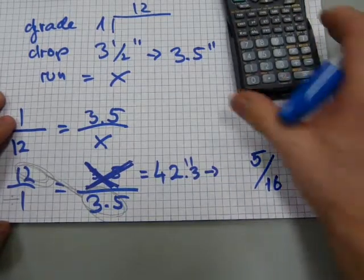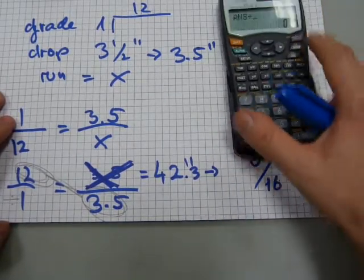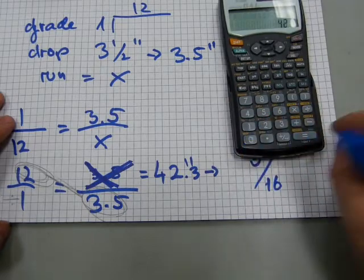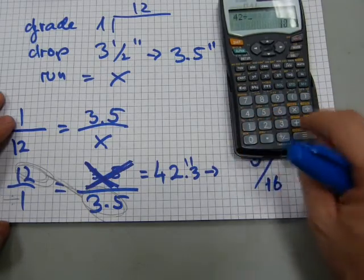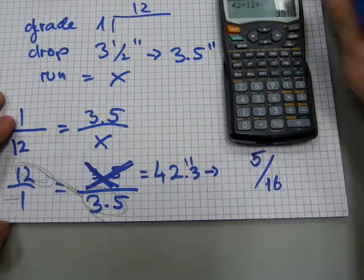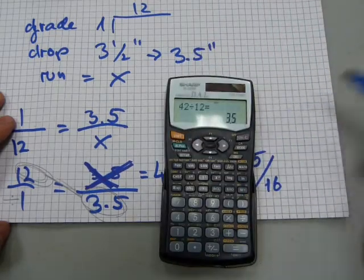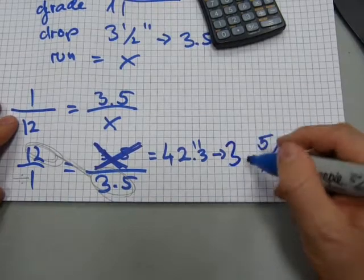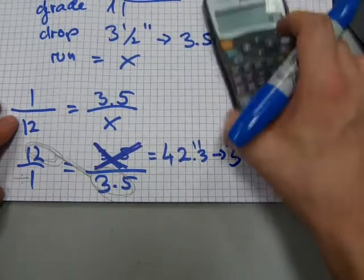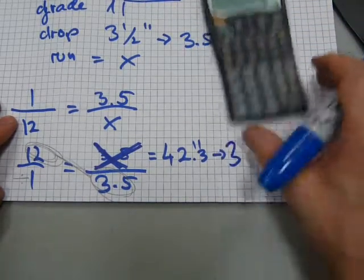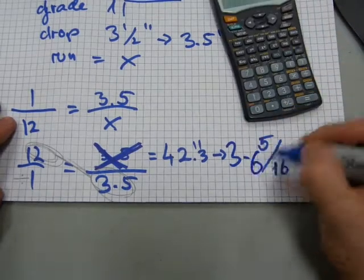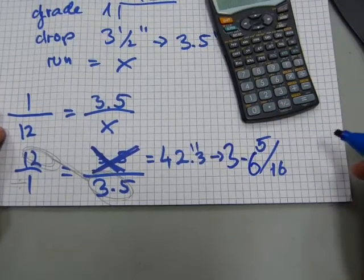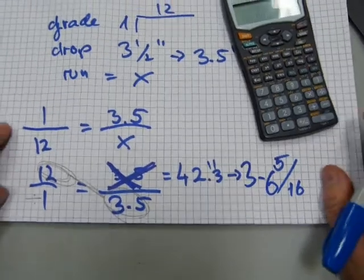So that's 5/16. And the 42 inches, how many feet in it? I don't know, divide by 12. That says 3.5. 42 inches has 3.5 feet in it, so I'm just gonna write 3 feet. And that half foot is just gonna be 6 inches. So that's 3 foot 6 inches and 5/16 is the run of the pipe.